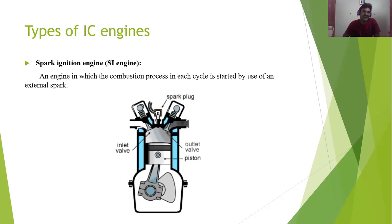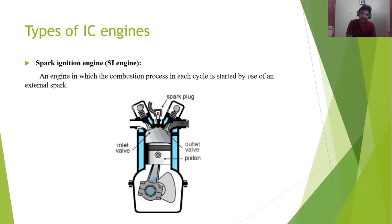In IC engines there are many types. The first type is the SI engine — Spark Ignition engine. This is the petrol engine. For a petrol engine we use a spark plug. The spark ignition engine is an engine in which the combustion process in each cycle is started by using an external spark. In the SI engine you have the spark plug, inlet valve, outlet valve, and piston — with the spark plug at the top.